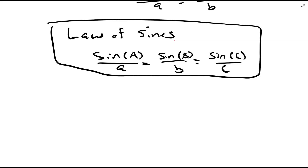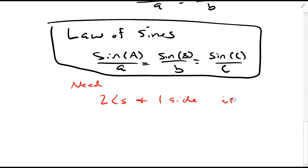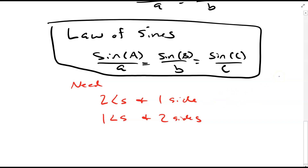In order to use the law of sines, I'm either going to need two angles and one side, or one angle and two sides. Specifically, if we remember back to our geometry course when we talked about congruent triangles, there were several triangle congruence theorems given with three-letter combinations.